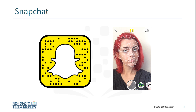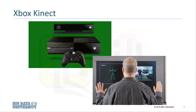There are many technologies that integrate machine learning, many of which you may use in your daily life. A great example of this is Snapchat, in which its facial recognition is an example of machine learning. Machine learning is also used in Xbox Kinect, which projects an infrared grid to determine depth, movement, and body shape of one or more people. Gesture recognition is used to analyze that data and output the results into the game.